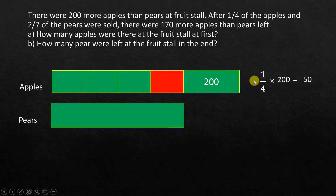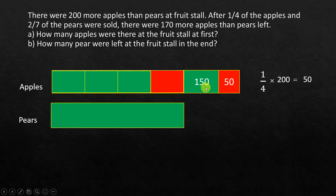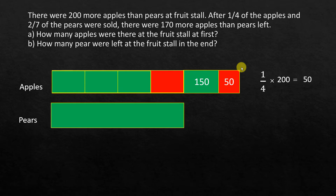Similarly, when we come to 200, we take 200 separately and take one-fourth of that as sold. One-fourth of 200 is equal to 50, so 50 is sold and we are left with 150. Just take note that any time you have an unknown and a known quantity and we are going to apply some fractions on it, we have to do it separately.